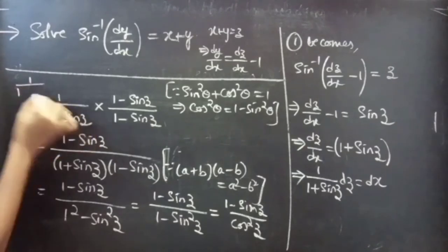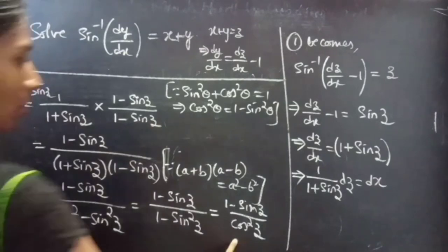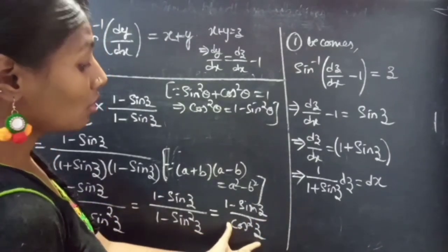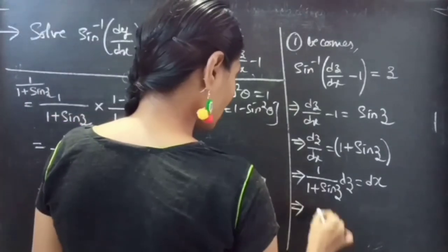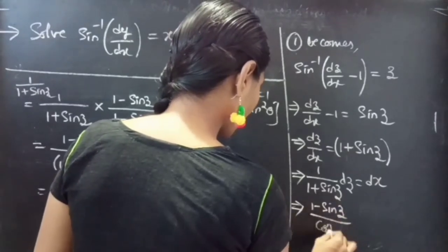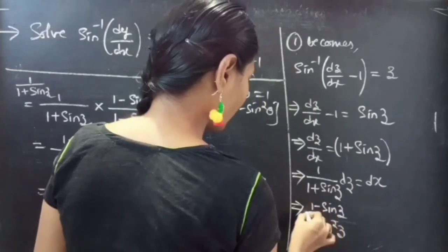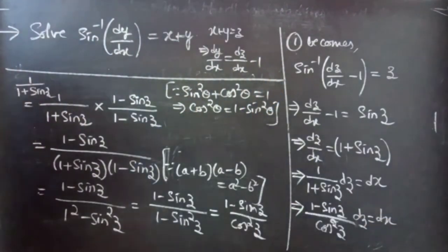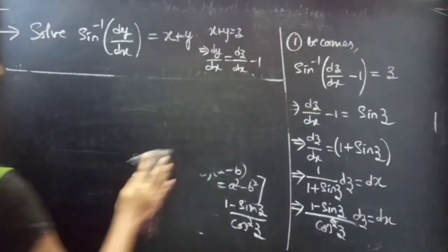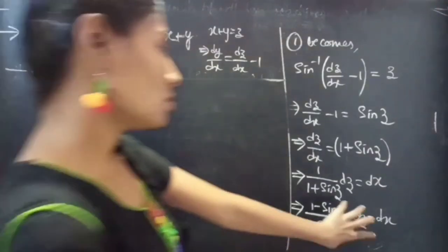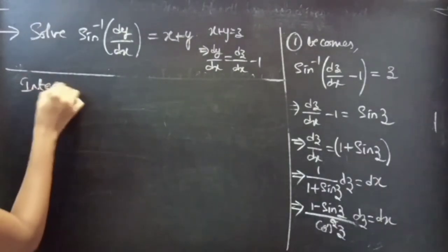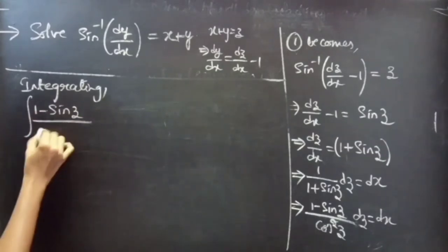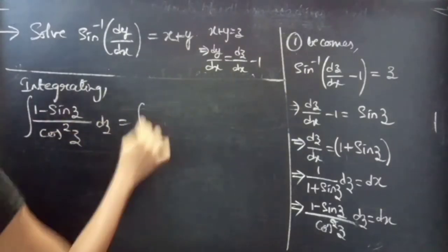So 1 over (1 plus sine z) is replaced by (1 minus sine z) over cos²z. Now we have one term in the denominator. The equation in variable separable form becomes: (1 minus sine z) over cos²z dz equals dx. Integrating both sides: integral of (1 minus sine z) over cos²z dz equals integral of dx.